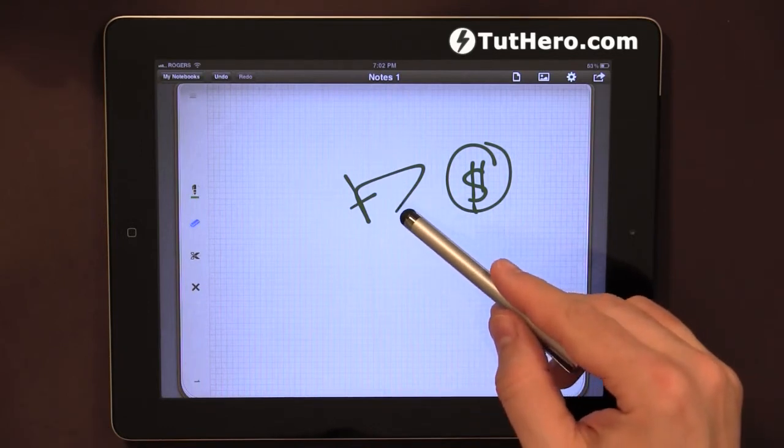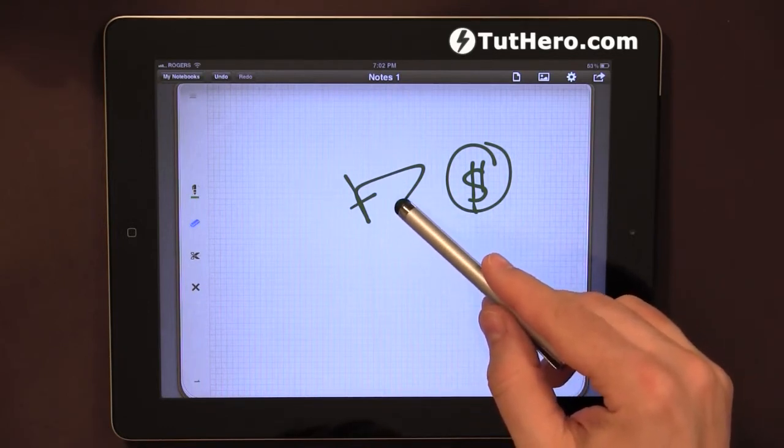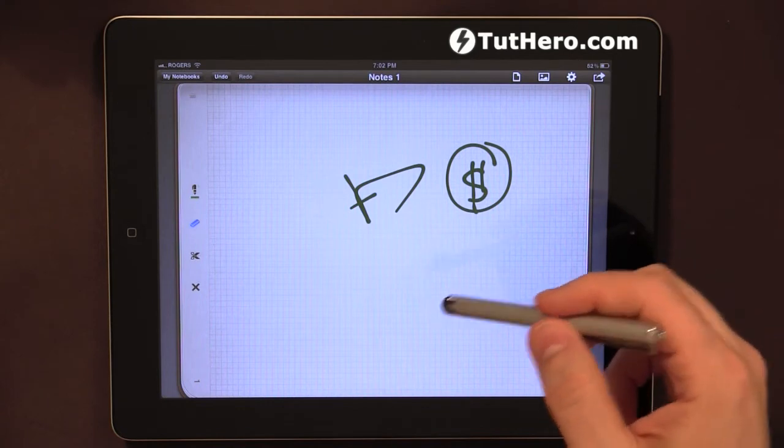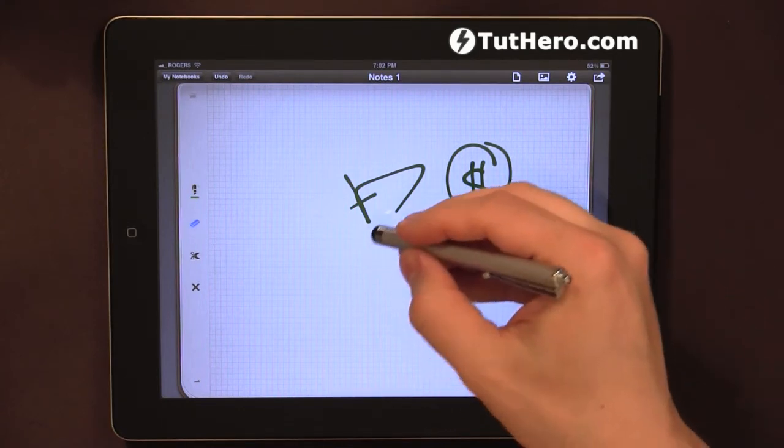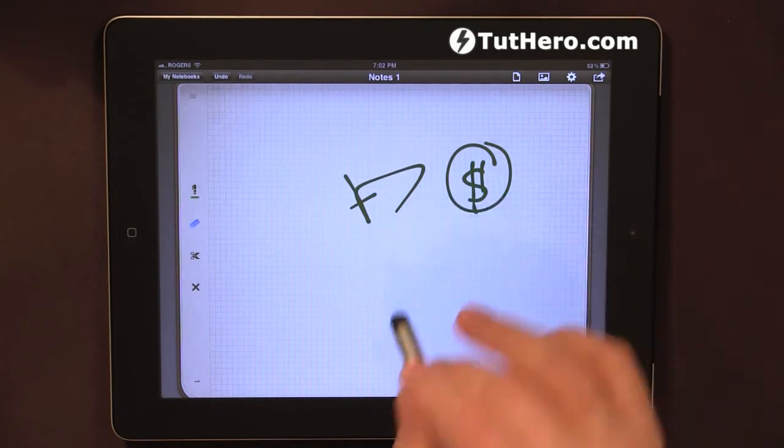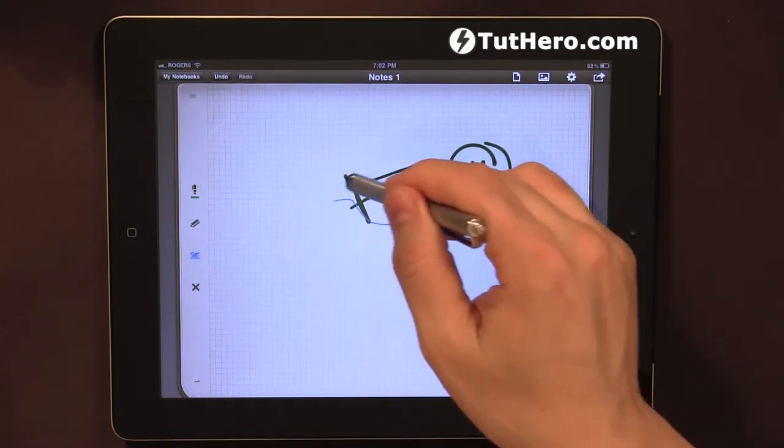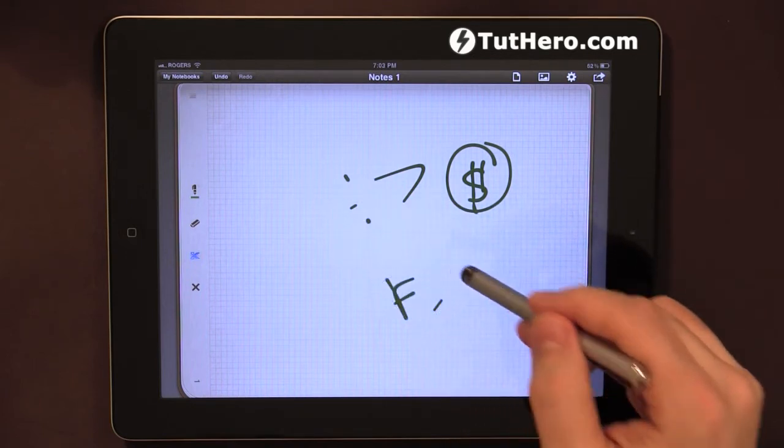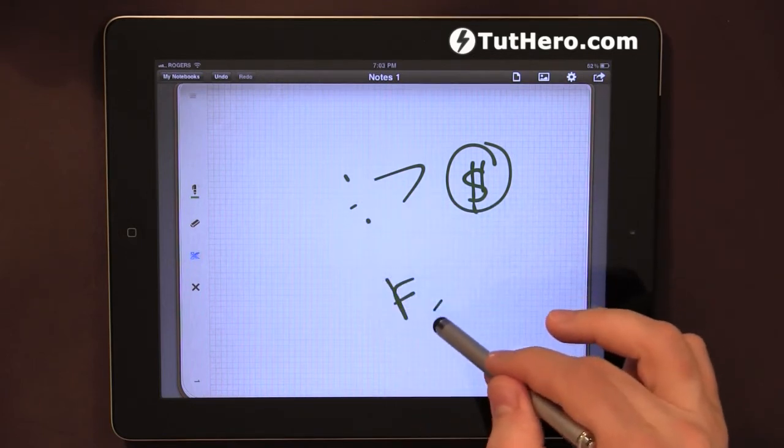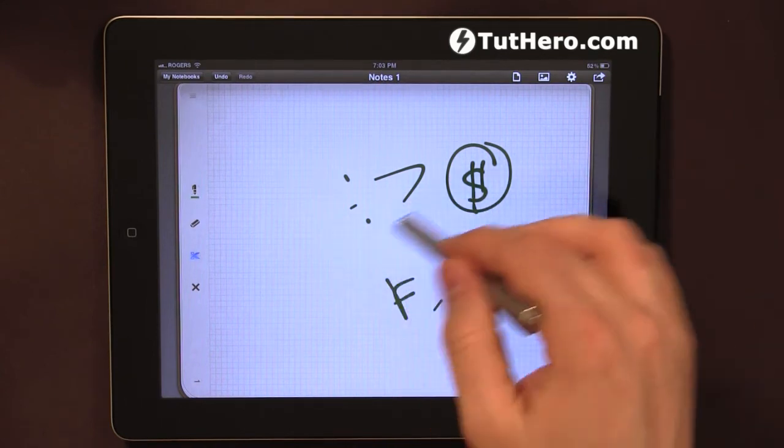You can use the eraser here to erase certain things. Even when you're erasing, the edge of the line is rounded so it never gets too sharp. You can also cut and move things around. Always very soft edges on anything you draw.